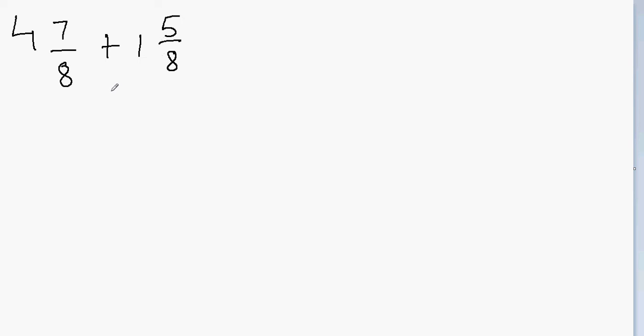So adding mixed numbers with like denominators is pretty easy. You add the whole number separately from the fractions and then add the fractional part and combine the results. So let's add the whole numbers first. So the whole numbers I have 1 and 4. So let's add them. 4 plus 1 will give me 5.